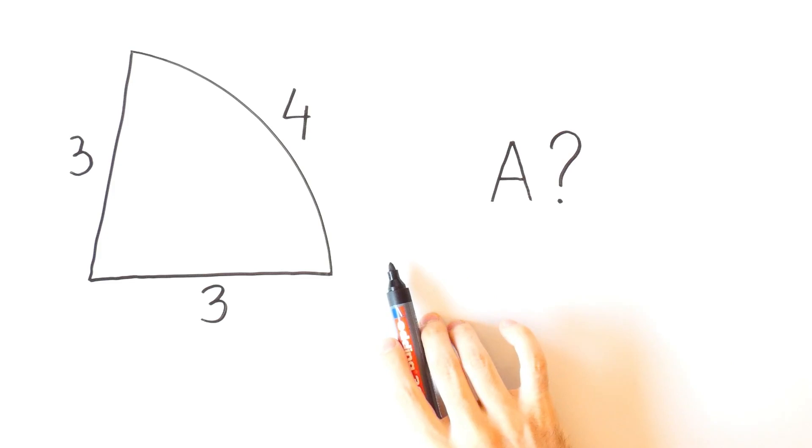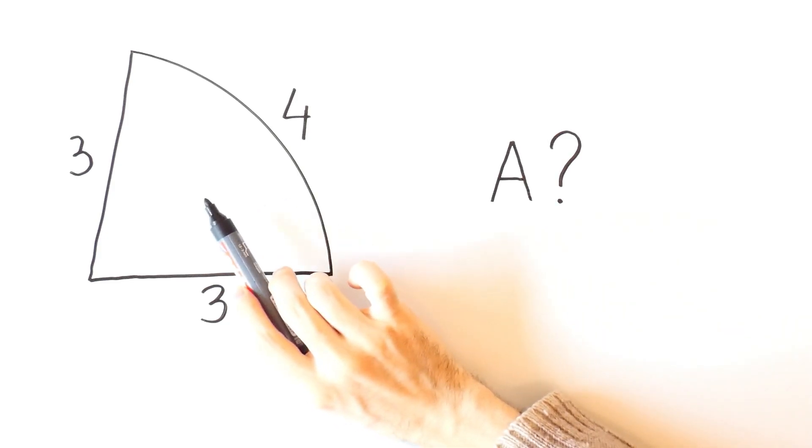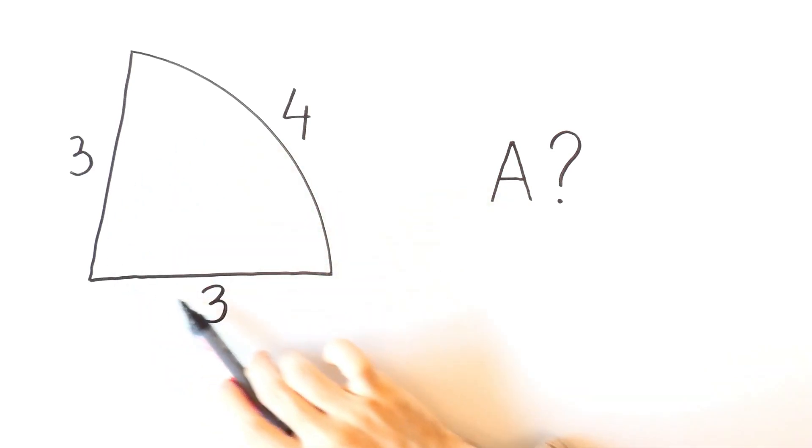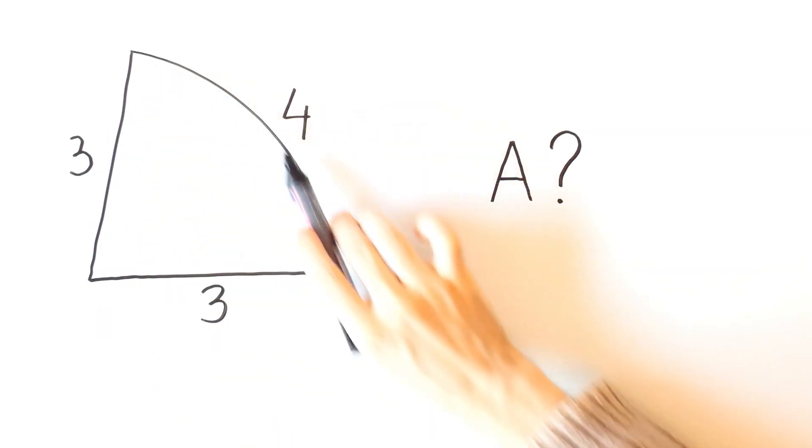In this video, we'll derive the formula for the area of a circular sector. Then we'll use that formula to find the area of this particular sector, which has radius 3 and arc length 4.